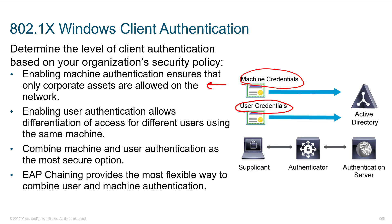Enabling user authentication allows differentiation of access for different users using the same machine. It gives us the ability to provide different levels of access — maybe you're the domain administrator but you're logged into somebody else's computer. We can assign different parameters to that switch port based on those conditions. Combining machine and user authentication is considered by most to be the most secure option. You can even do two-factor on the user for very high confidence. EAP chaining is what we typically leverage to deploy machine and user-based authentication.